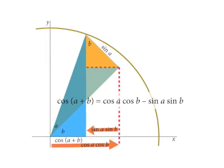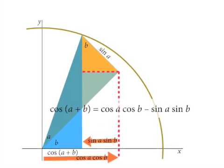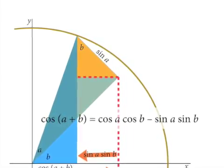So now we can combine our results. The cosine of A plus B is the right arrow, cosA cosB, minus the left arrow, sinA sinB. And we're done.